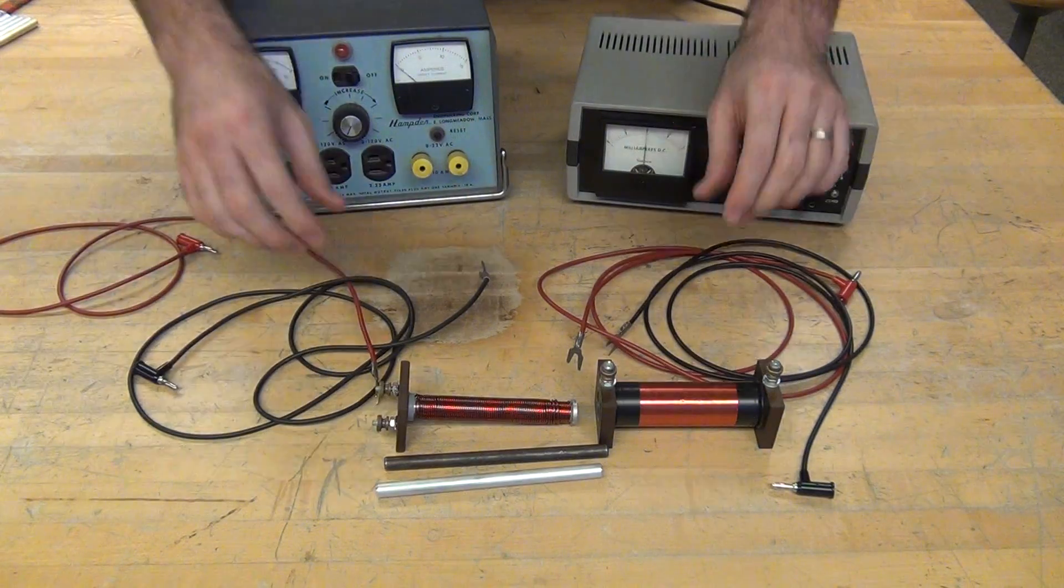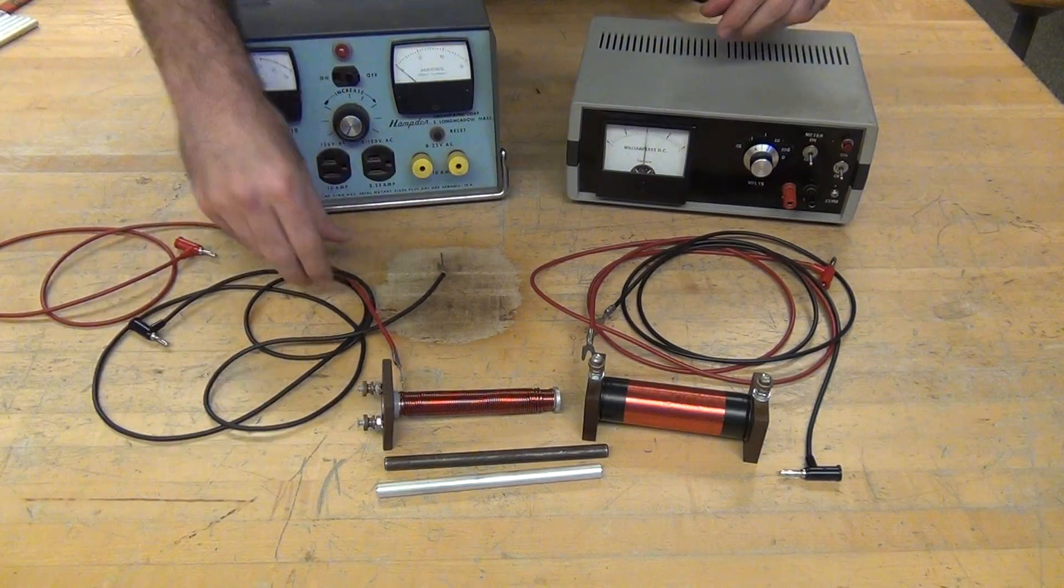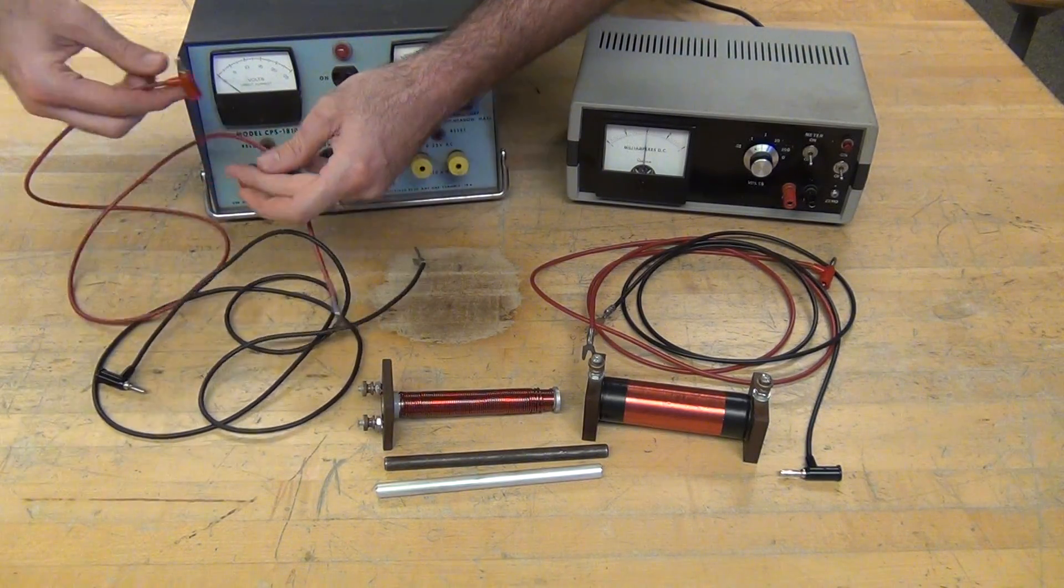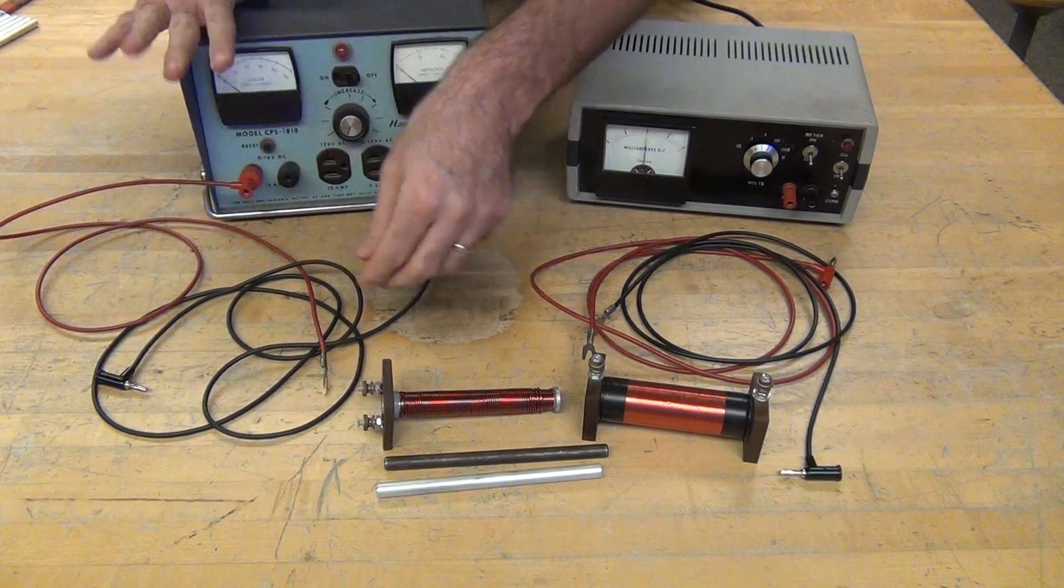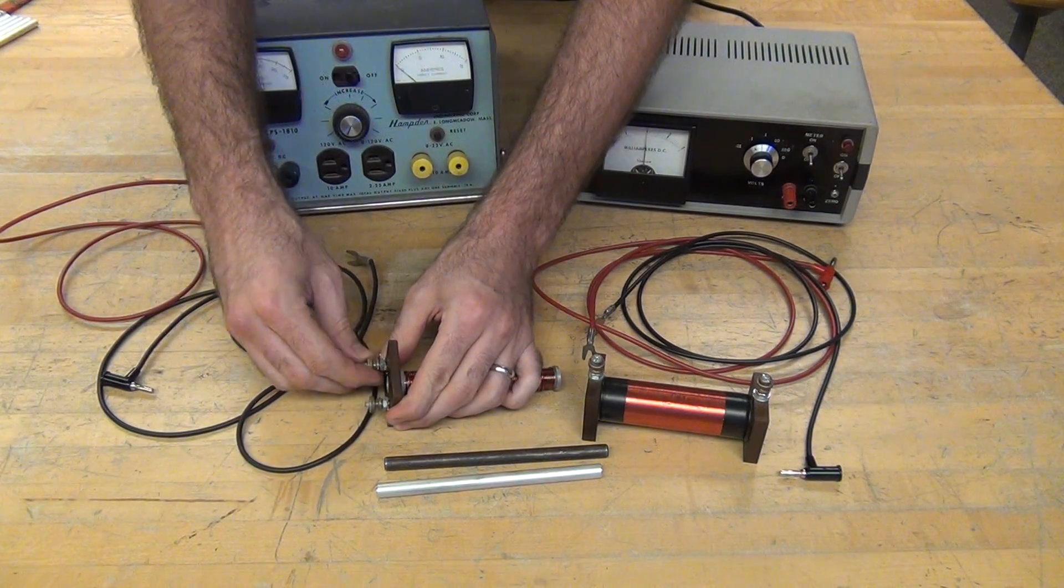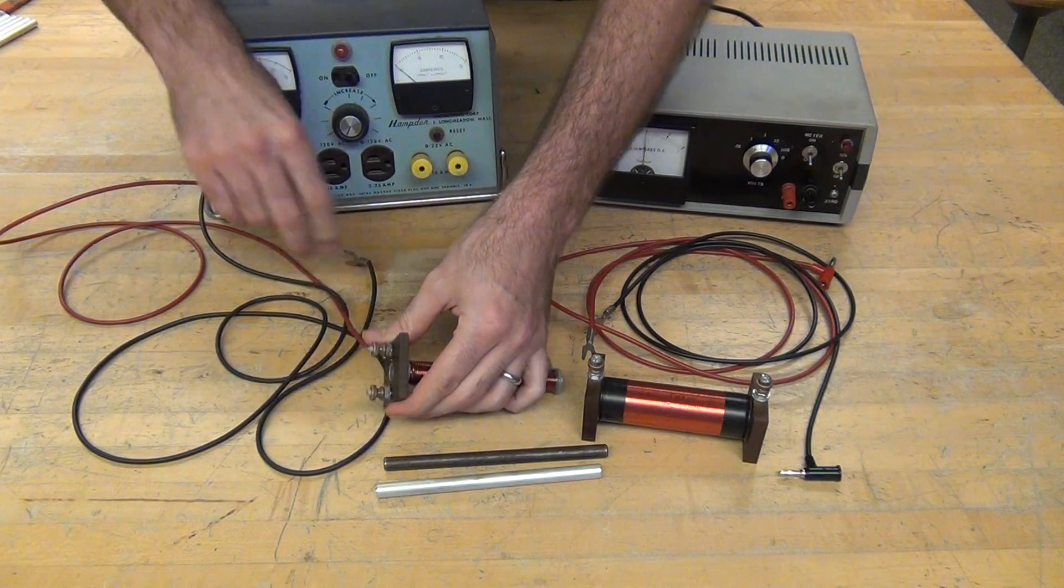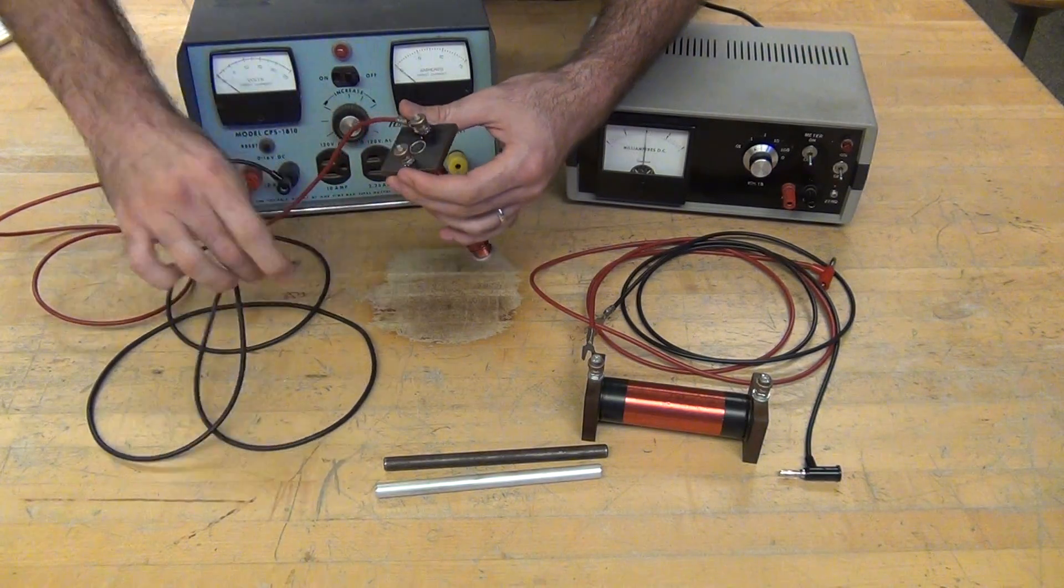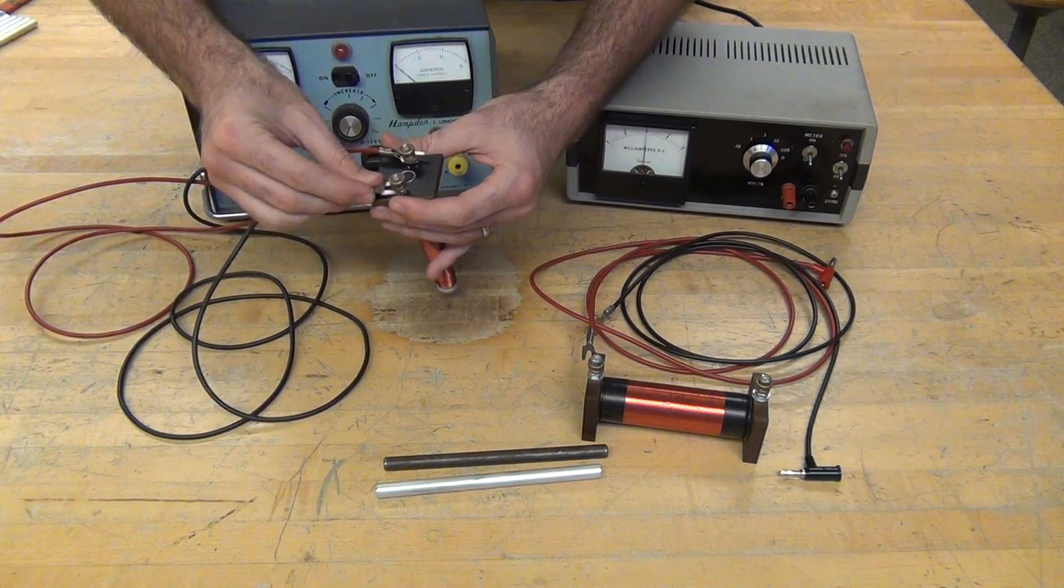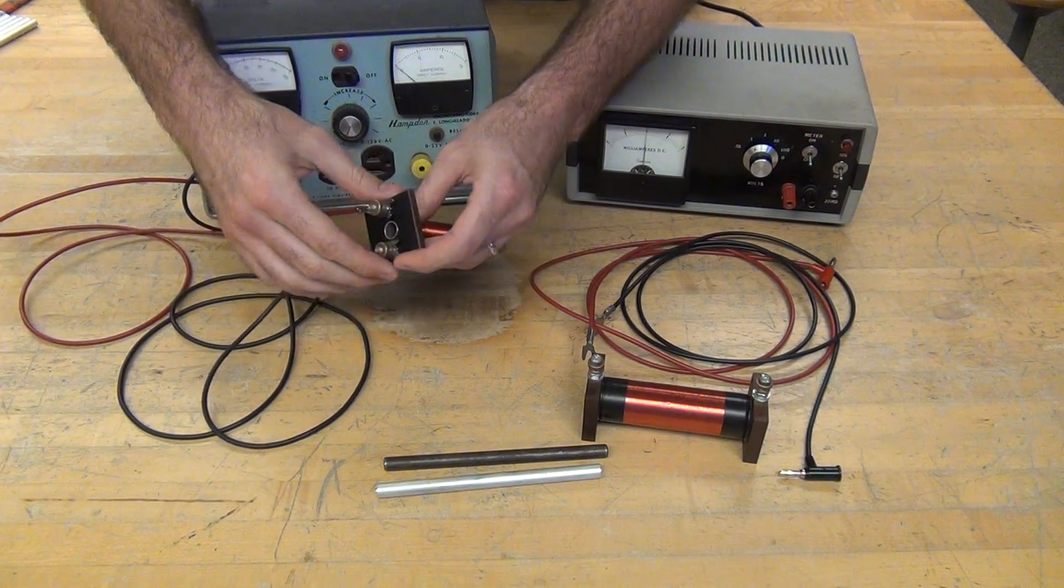So I'm going to use two coils now. I have four banana to spade connectors. Our Hamden power supply is going to be hooked up to one of our coils. It's off while I work on it. I want to make sure that I leave that hole in the middle of that coil accessible.